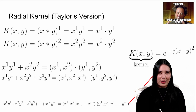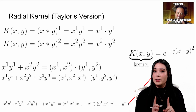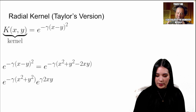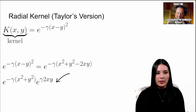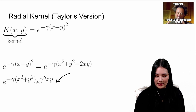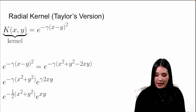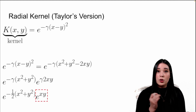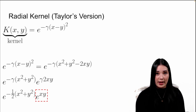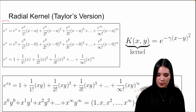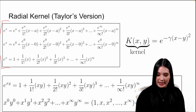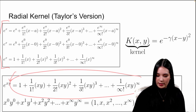It turns out this is essentially what our radial kernel is doing, and I'll prove it using Taylor series expansion. Taking our radial kernel and expanding it using some algebra, we get this value here. Gamma is just a hyperparameter that we can choose, so I'm going to set it to one half just so this pesky little two goes away. Now I get this function. We are going to take the right-hand term e to the xy and use a Taylor series to rewrite it. This is basically how you get the Taylor series of e to the x. Plugging in xy for x, we get this infinite series.